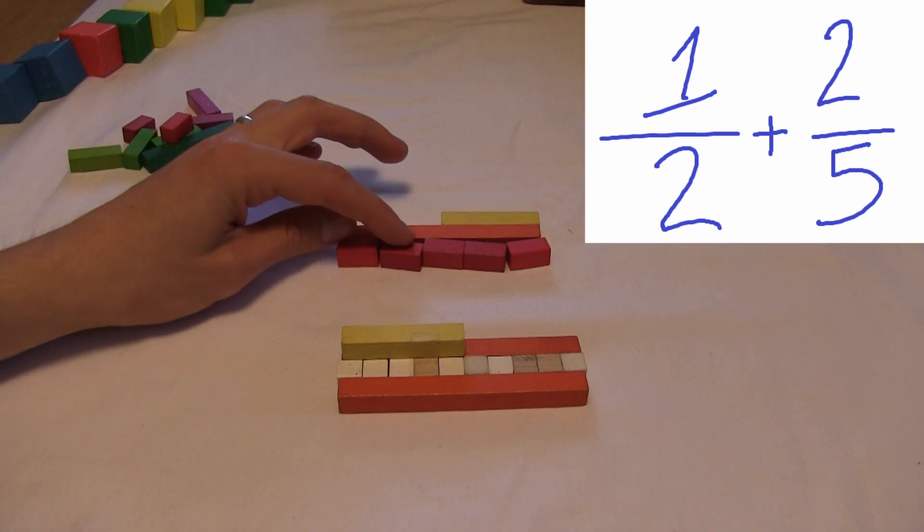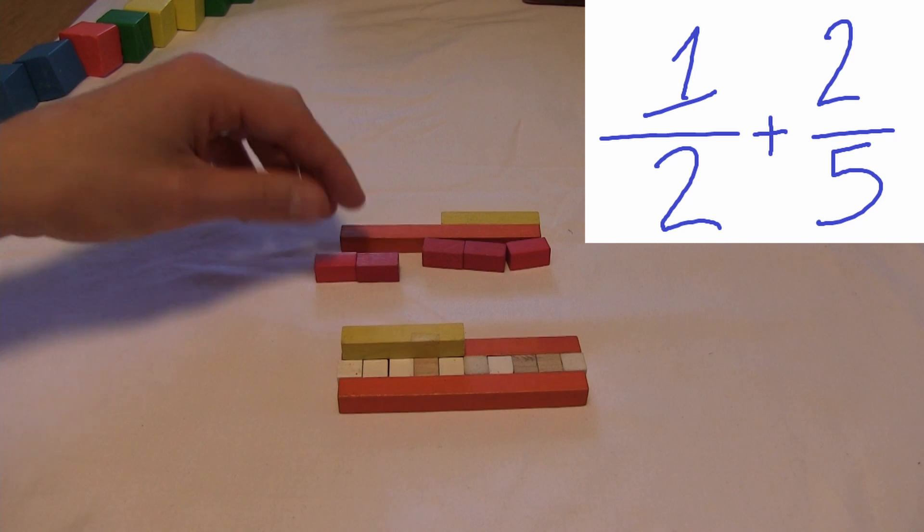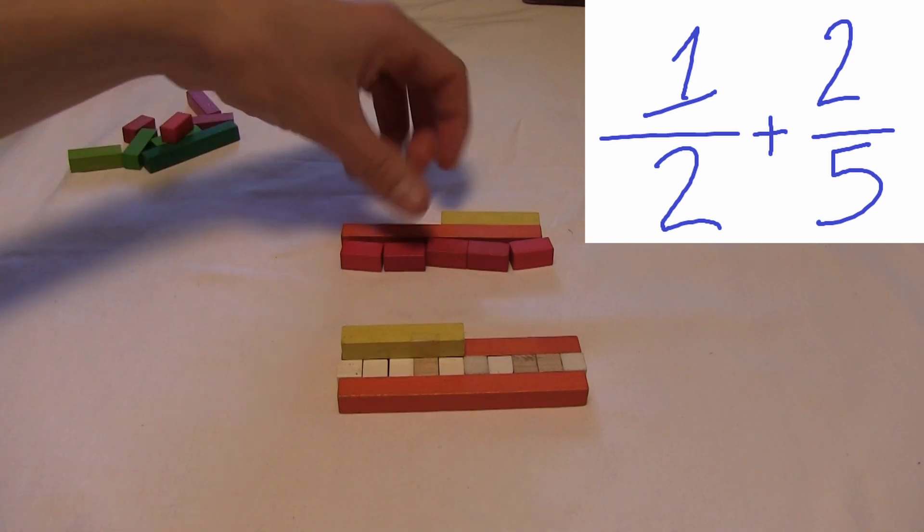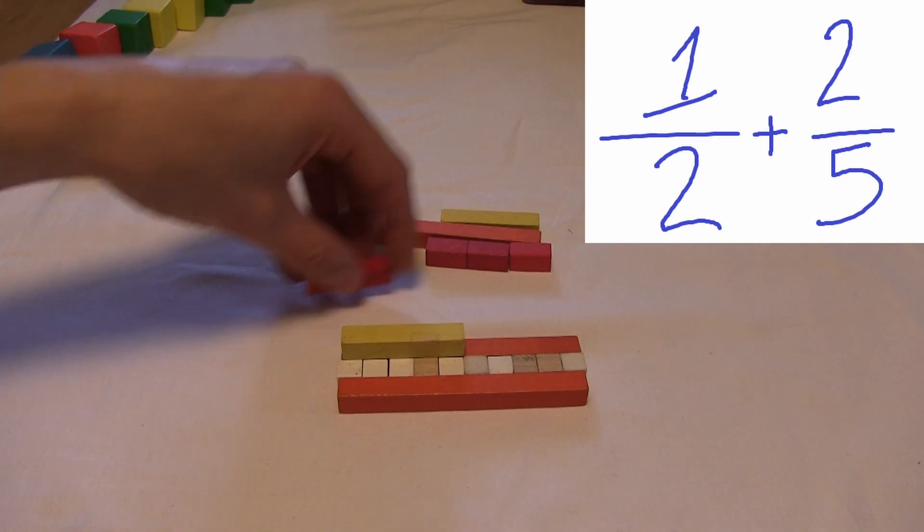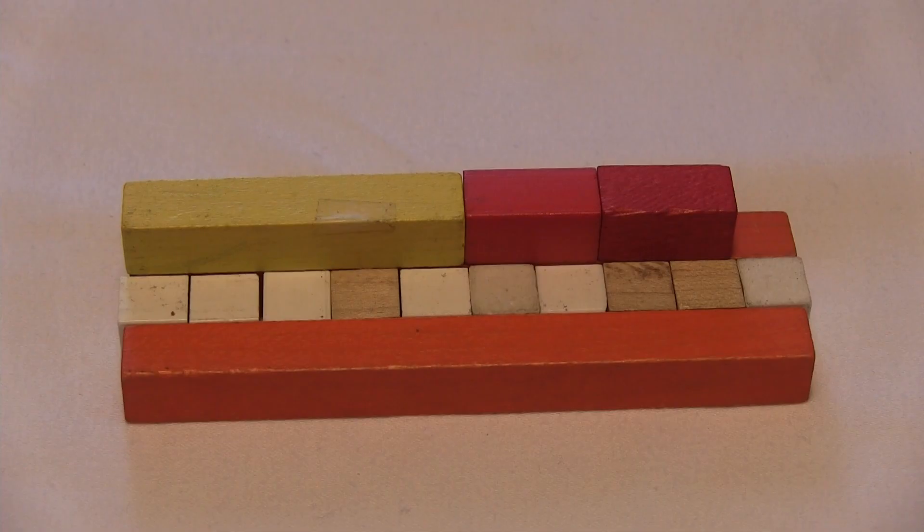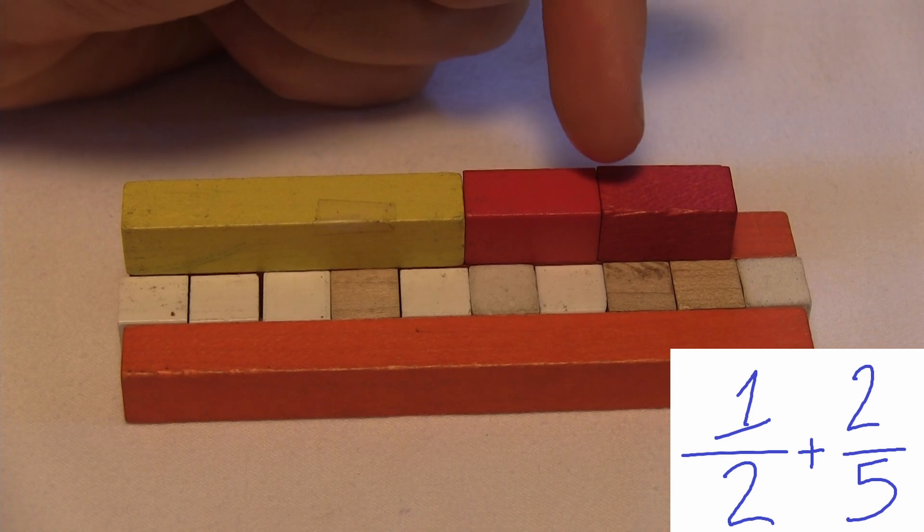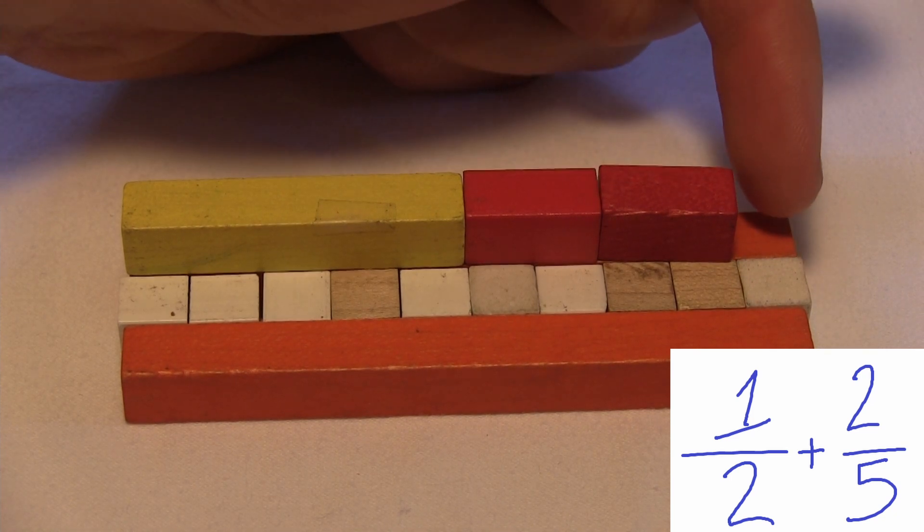And I'm going to take two of these, which we found out to be fifths. It takes five to equal one whole. I'm going to take two of those and I'll stick those down here. All right, how much does that equal? We have one-half plus two-fifths and it's almost one whole.